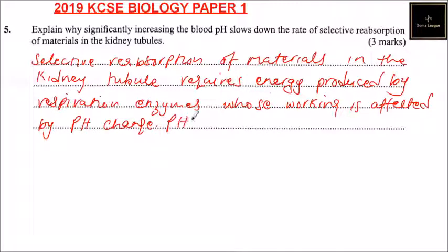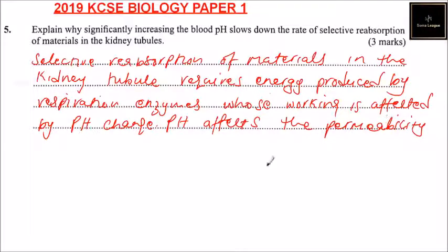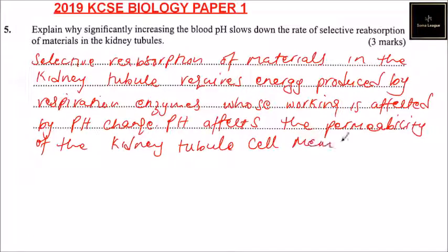pH affects the permeability of the kidney tube cell membrane. So that is why an increase in pH affects the rate of selective reabsorption of materials in the kidney tube — it affects the permeability of the kidney tubule cell membrane.